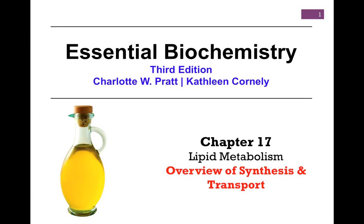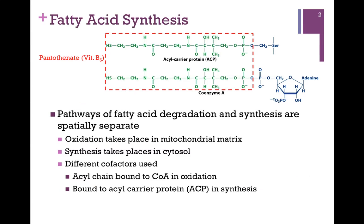In our next lesson on lipid metabolism from Chapter 17, we want to do a brief overview of fatty acid synthesis and transport. The pathways of fatty acid catabolism and anabolism — that is degradation and synthesis — are actually spatially separate, accomplished in separate compartments. Recall that beta-oxidation takes place in the matrix of the mitochondria, but synthesis takes place in the cytosol. Keeping them spatially separate allows us to regulate these opposing pathways, as we'll see in a later lesson.